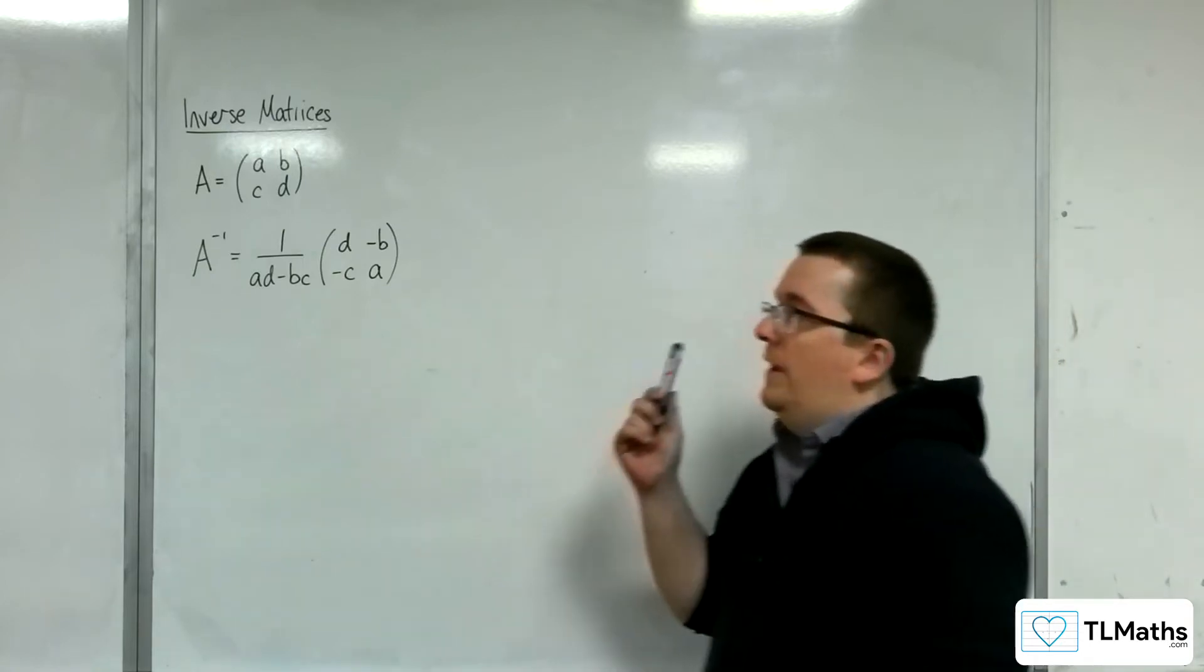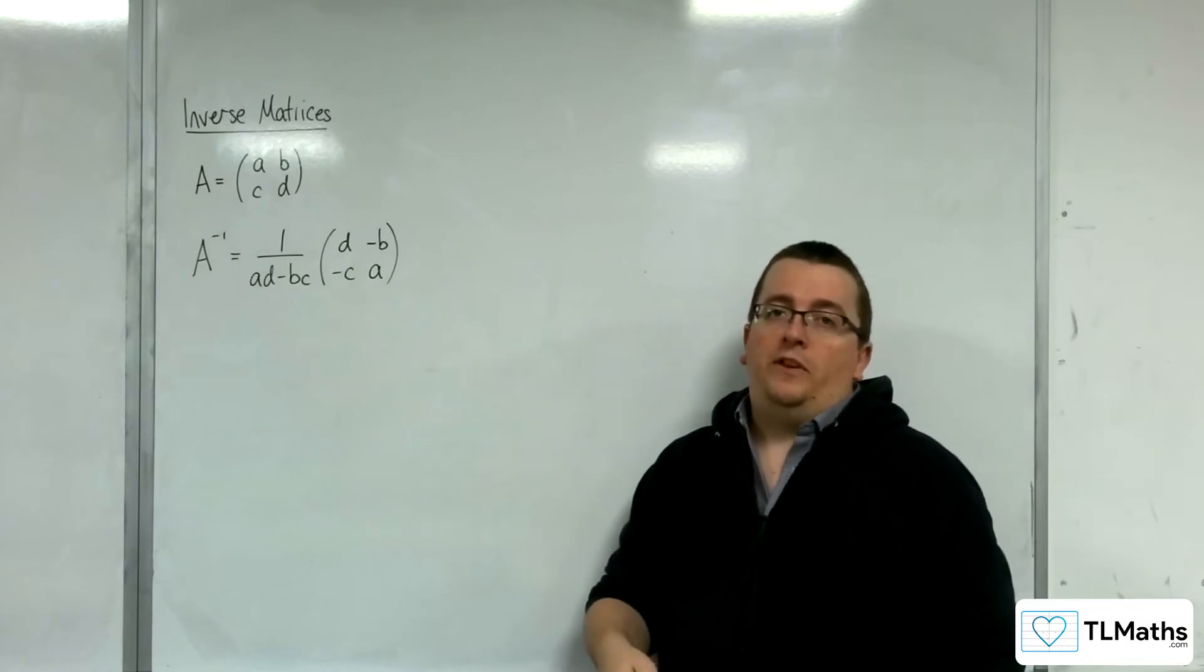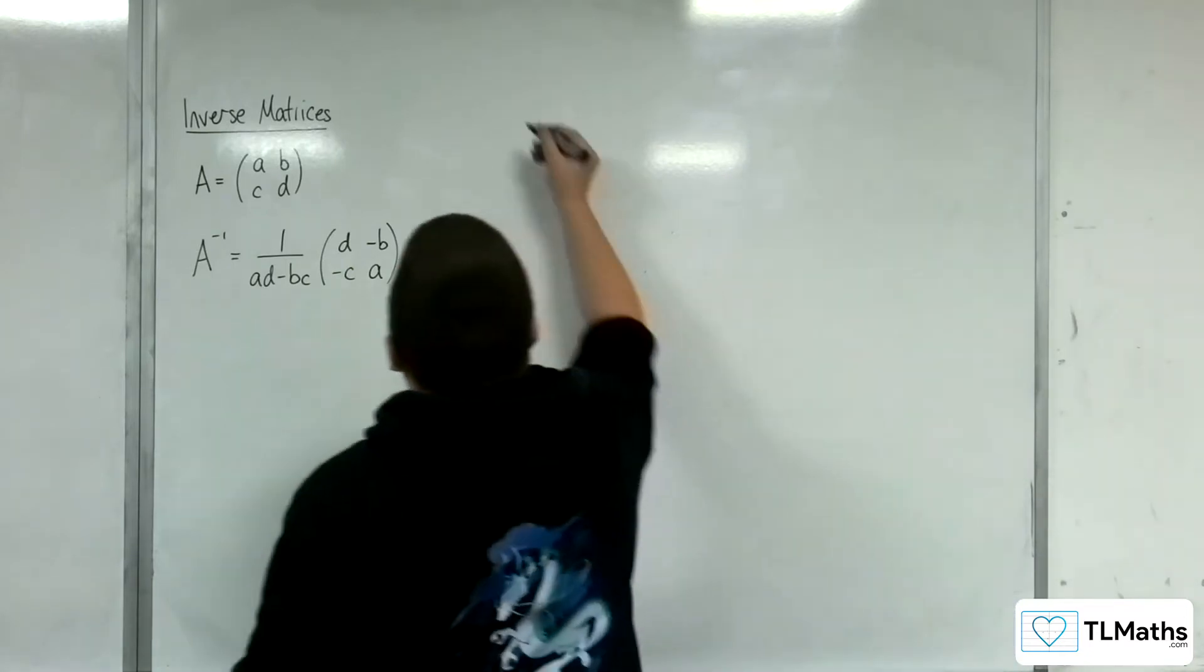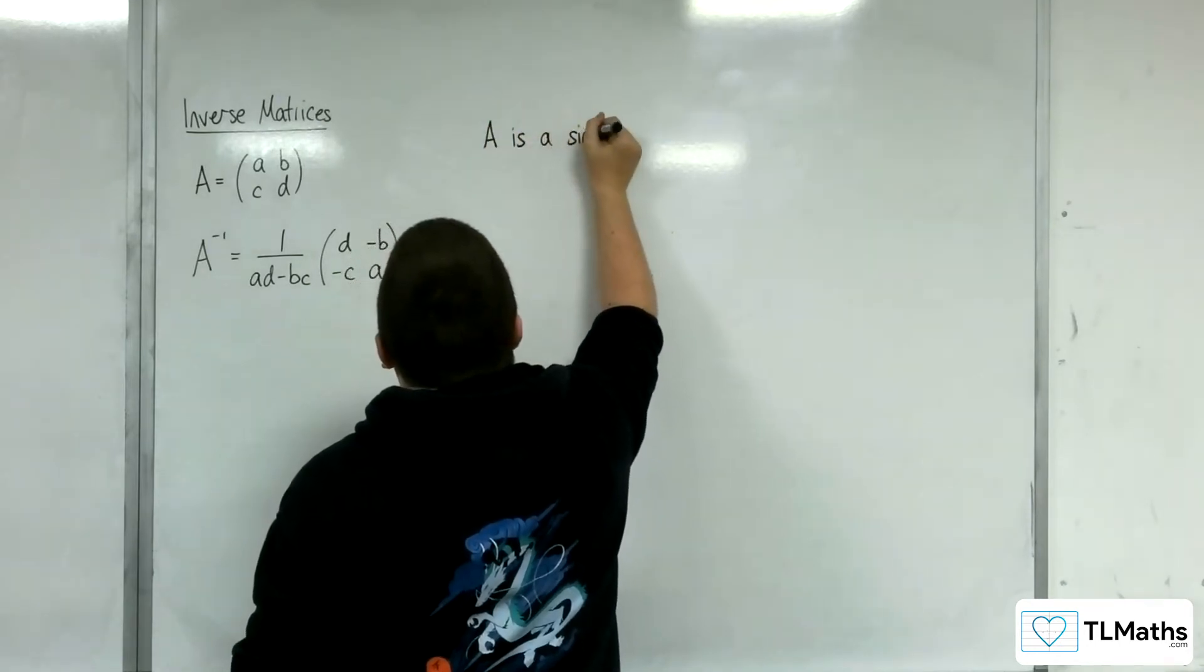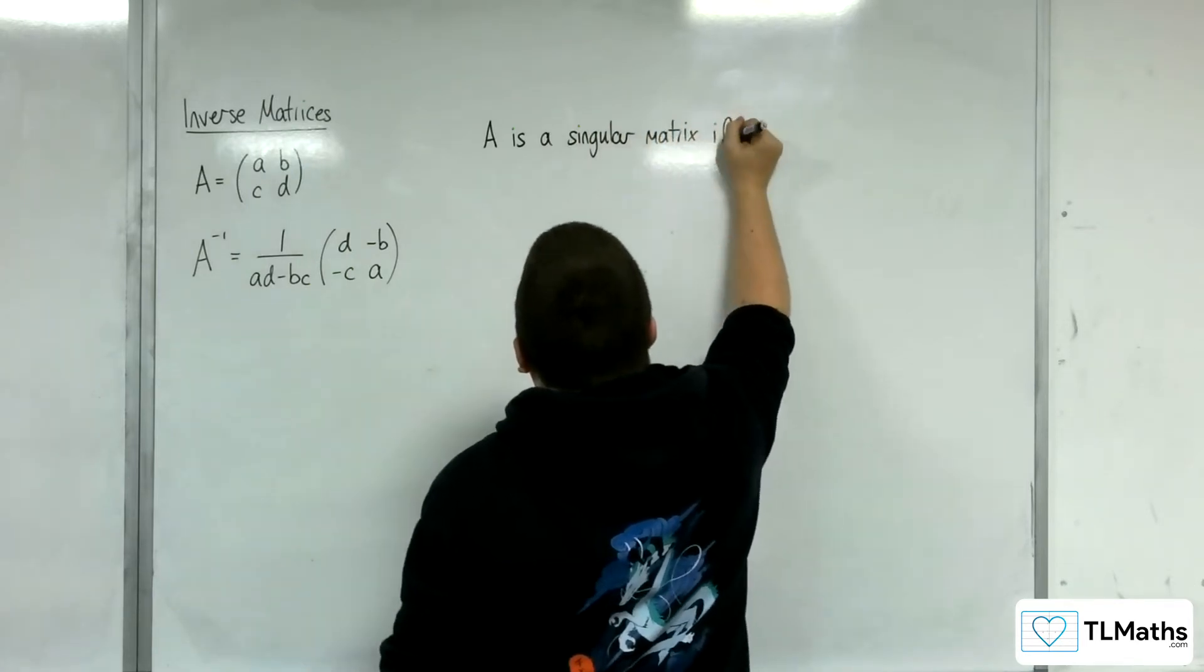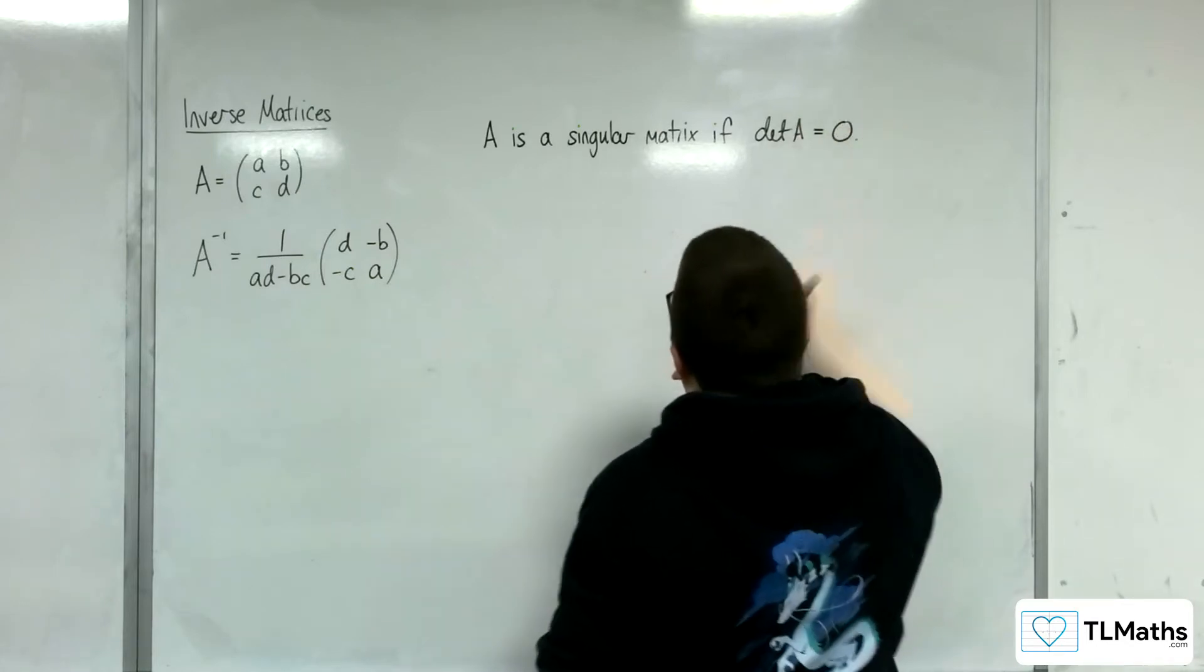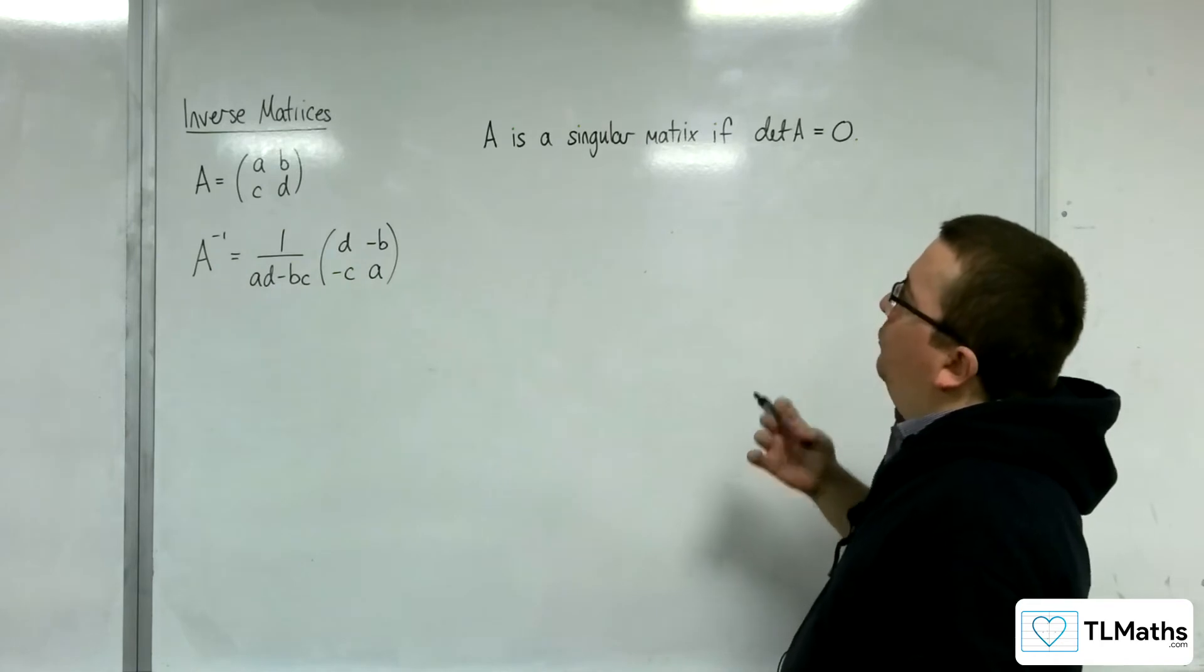So, we actually have a special name for matrices that have determinant 0. We refer to them as singular. So, we would say A is a singular matrix if the determinant of A is 0. So that is what we would refer to.